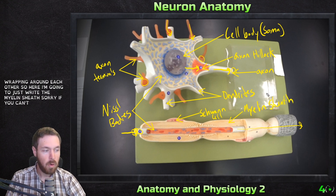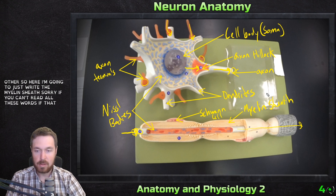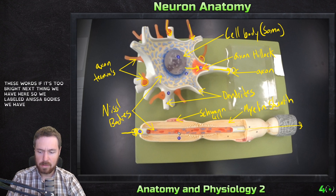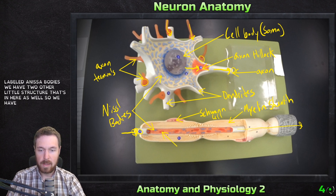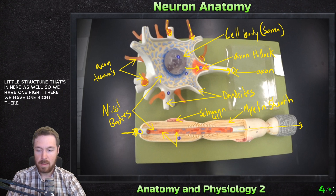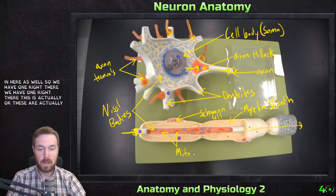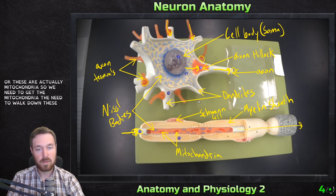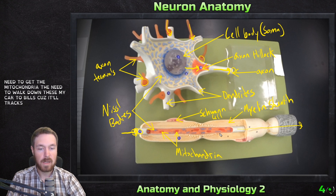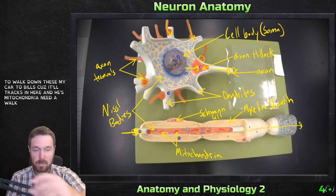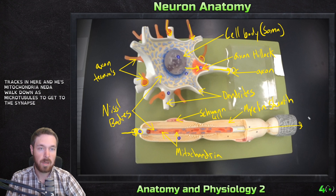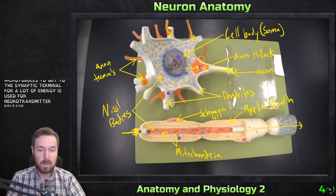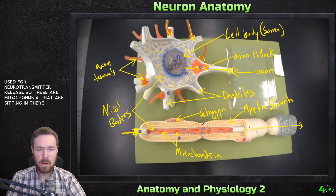We also have another little structure in here — we have one right there and one right there. These are actually mitochondria. They need to walk down microtubules — there are little tracks in the axon — and these mitochondria walk down those microtubules to get to the synaptic terminal, where a lot of energy is used for neurotransmitter release.